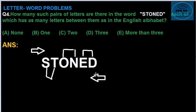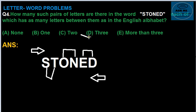Then from O: O, P, Q — no pair. From T: no. From S: no. So from the word STONES, we can find that there are only three pairs total. The correct answer is D, that is three. Thank you guys for watching and see you in the next upcoming video.